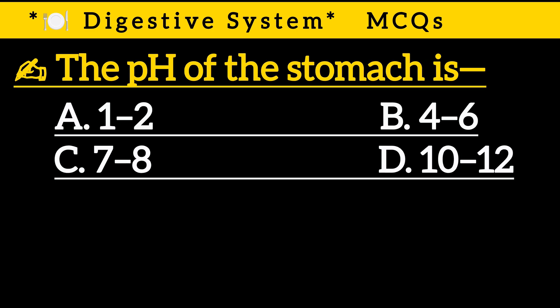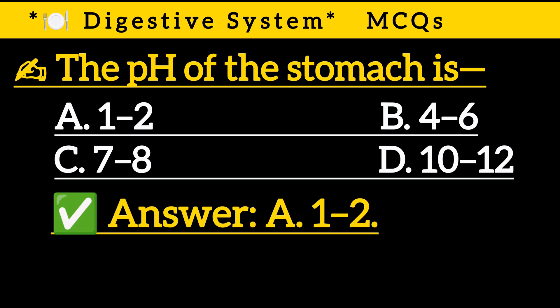Question 16: The pH of the stomach is — Option A: 1 to 2, Option B: 4 to 6, Option C: 7 to 8, Option D: 10 to 12. Correct answer is Option A: 1 to 2.